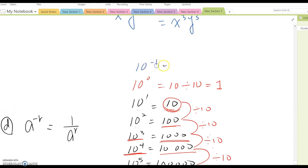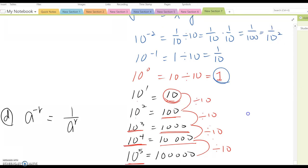10 to the negative 1, which is 1 divided by 10, which means 1 over 10. So, become 1 over 100 or 1 over 10 squared.